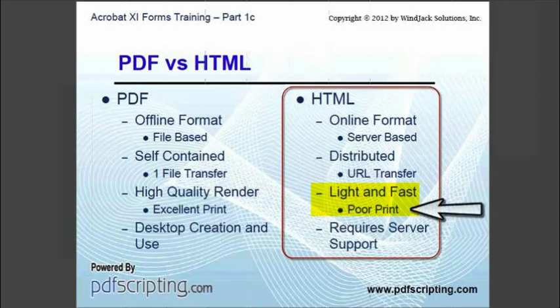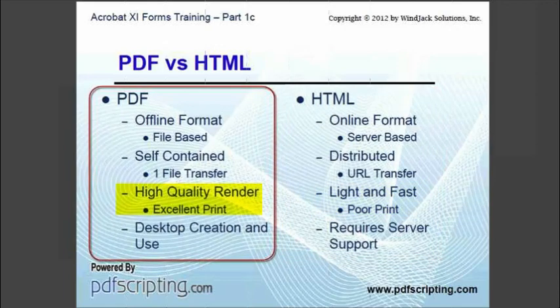HTML does not reproduce well. Web pages look different on different systems. They also don't print well because they are designed to look good on a screen, not on a piece of paper. PDF, on the other hand, has very high quality and exacting graphic reproduction capabilities. To a large extent, a PDF looks and acts much like a paper document. This is the reason that PDF first became popular in the print industry. But more importantly for us, it means that PDF has a familiar look and feel and works well in a mixed paper and electronic workflow.